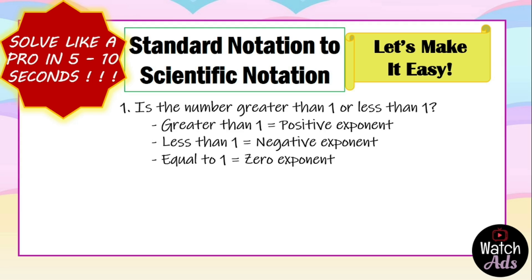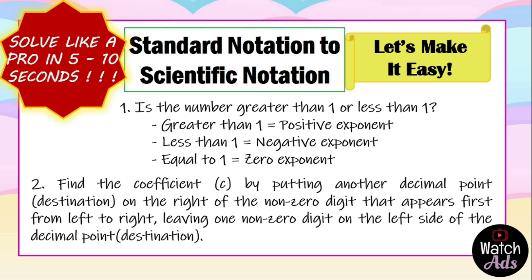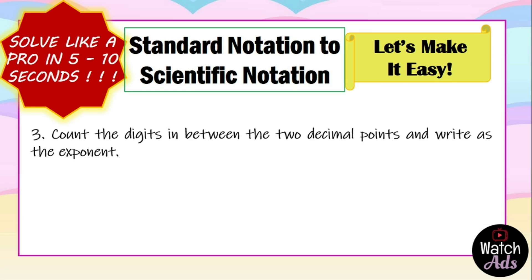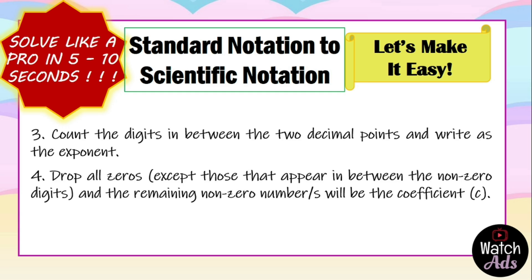Second, find the coefficient C by putting another decimal point or the destination to the right of the non-zero digit that appears first from left to right, leaving one non-zero digit on the left side of the decimal point. Third, count the digits in between the two decimal points and write that as the exponent. Fourth, drop all zeros except those that appear in between the non-zero digits — the remaining non-zero numbers will be the coefficient.